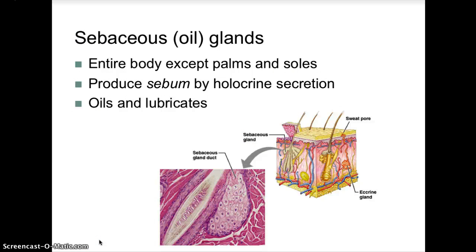Integumentary System, Lecture 3. We ended our last lecture looking at glands, one of those being the sebaceous glands. Sebaceous glands are associated with hair follicles and are found on the entire body except the palms and soles. They produce and secrete that oily substance we call sebum, which flows into the follicle and out onto the skin surface by holocrine secretion, oiling and lubricating the skin.